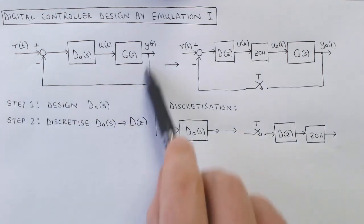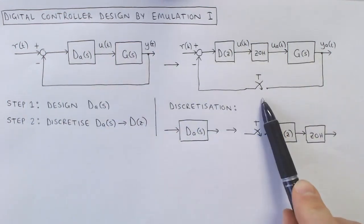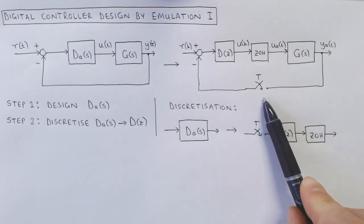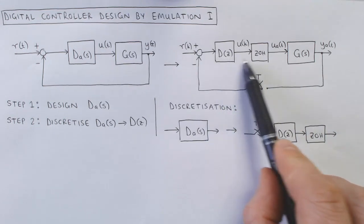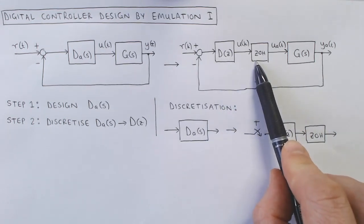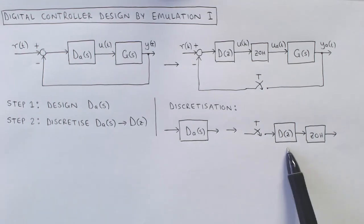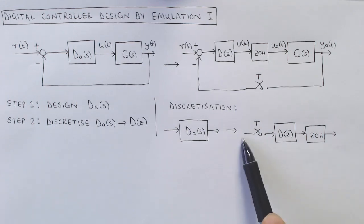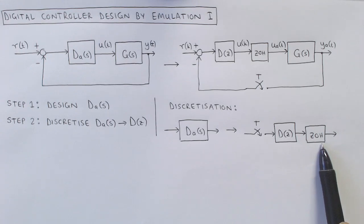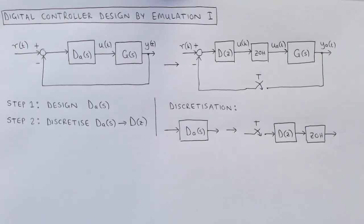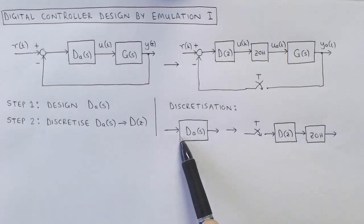When we compare the analog control system configuration with the digital control system configuration, we require that the combination of the sampler, discrete time controller, and zero order hold circuit behave similarly to the continuous time controller. If we ignore the reference input we can draw the process of discretization where we take the designed continuous controller and find a discrete time controller such that the combination of the sampler, controller, and zero order hold circuit behave similarly to the continuous time controller. We have previously seen that the sample and hold circuit, which is the case when the discrete controller is a gain, can be approximated as a gain or a pure time delay.